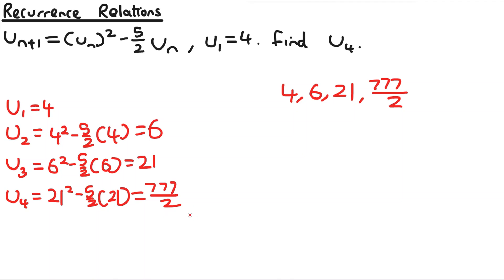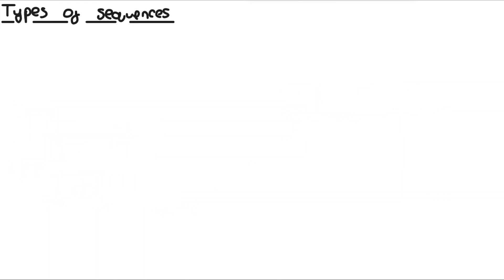It makes weird sequences that are not arithmetic or geometric. This next part of the video is separate to recurrence relations — there wasn't enough content to make a video on its own. This section is for sequences in general: arithmetic, geometric, and recurrence. Sequences can be classed into different types.